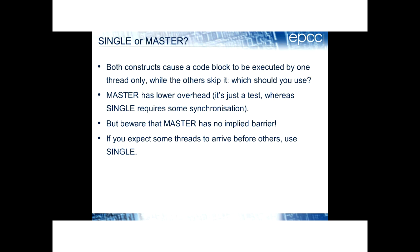If you're inside a parallel region and you want a block of code to be executed by one thread only, OpenMP gives you two choices: the single construct or the master construct. Typically, master has lower overhead. Master says: do this on thread zero. So the implementation is trivial — it's just a test: am I thread zero? Yes, execute this block. No, skip it.